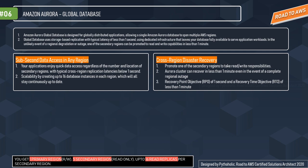You might wonder — the same database thousands of miles apart, will it perform accurately? Yes! AWS Aurora Global Database replicates your data with no impact on database performance, enables fast local reads with low latency in each region, and provides disaster recovery from region-wide outages. Global Database uses storage-based replication with typical latency of less than one second, using dedicated infrastructure that leaves your database fully available. Even during an outage, a secondary region will be up and running in less than one minute.